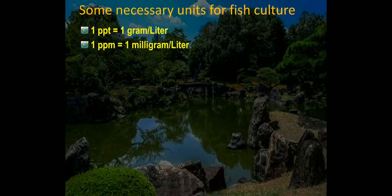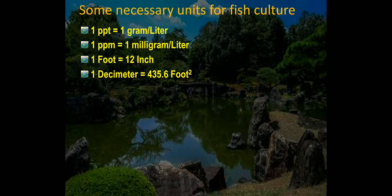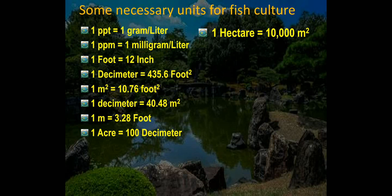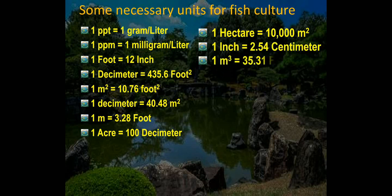1 foot equals 12 inches. 1 decimal equals 435.6 square feet. 1 square meter equals 10.76 square feet. 1 decimal equals 40.48 square meters. 1 meter equals 3.28 feet. 1 acre equals 100 decimals. 1 hectare equals 10,000 square meters. 1 inch equals 2.54 centimeters. 1 cubic meter equals 35.31 cubic feet.